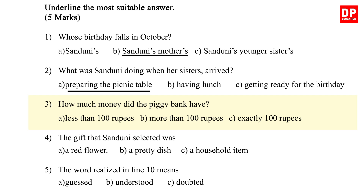Question 3: How much money did the piggy bank have? A. Less than 100 rupees. B. More than 100 rupees. C. Exactly 100 rupees. The correct answer is C — exactly 100 rupees. Question 4: The gift that Sandini selected was A. A red flower. B. A pretty dish. C. A household item. The correct answer is A — a red flower. Question 5: The word 'realized' in line 10 means A. Guessed. B. Understood. C. Doubted. The correct answer is B — understood.